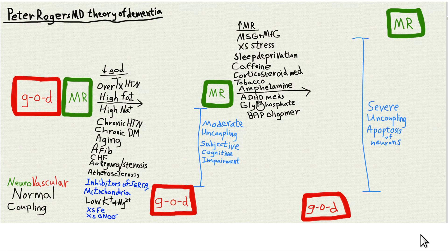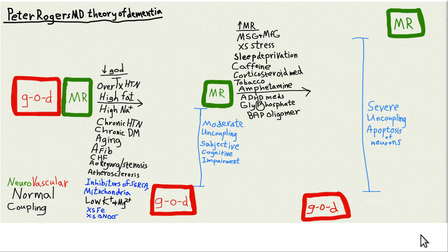This video is how does neurovascular uncoupling cause brain damage? And this is part of my theory, the Peter Rogers MD theory of dementia. I previously mentioned this concept in previous lectures, but I made a drawing of it for the first time, so that's why I'm giving this talk here.